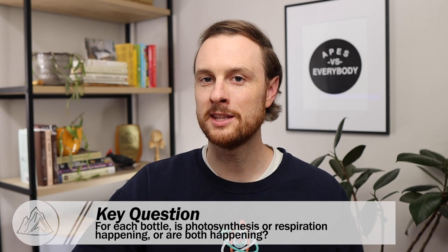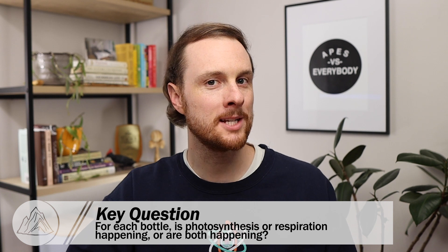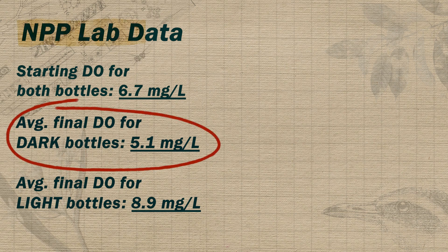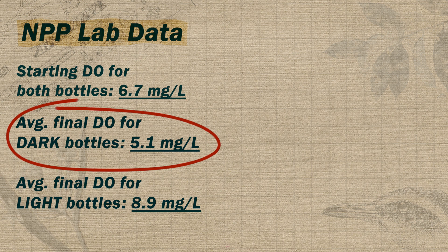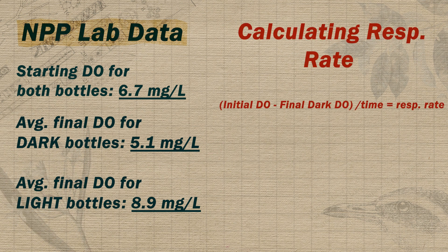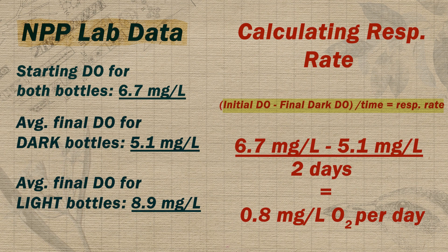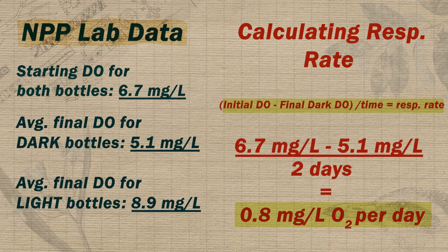The key question is: in each bottle, is photosynthesis occurring on its own, cellular respiration occurring on its own, or are both occurring at the same time? In the dark bottle, all that was happening was cellular respiration, since plants can't photosynthesize in the dark. This means we can calculate the respiration rate by subtracting the final dissolved oxygen level in the dark bottle from the initial dissolved oxygen level and dividing by the number of days we ran the experiment, since we want this as a rate. Working through this, our guppy grass was using 0.8 milligrams of oxygen per liter of water per day for cellular respiration.